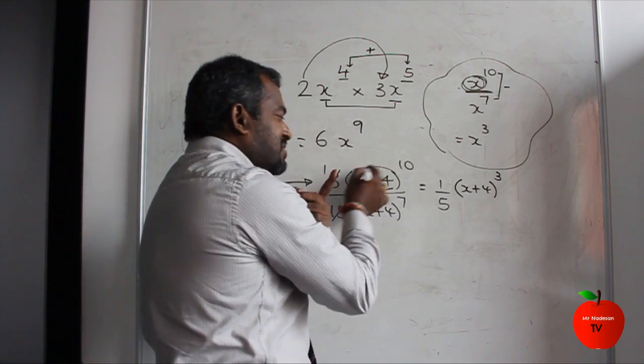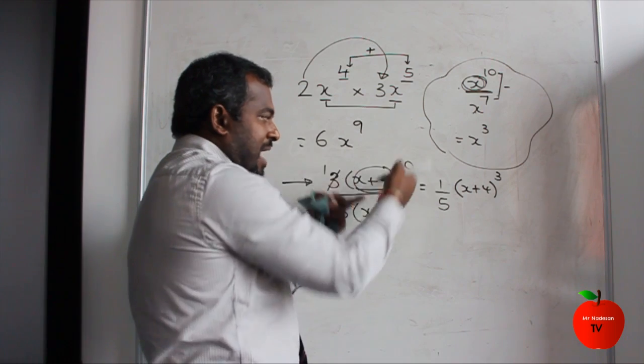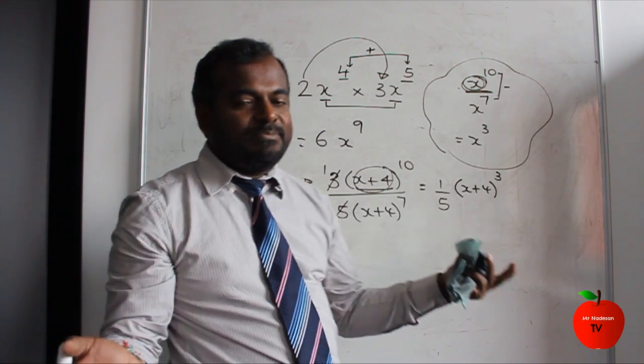So instead of x, we have x+4. You have to make sure the bases are the same. And then, when you divide, you subtract the powers. Very simple as that.